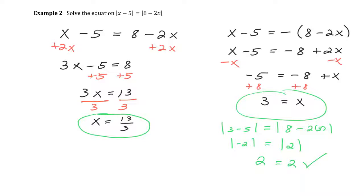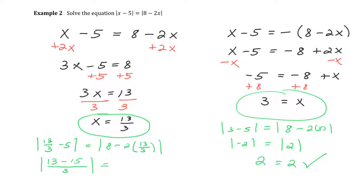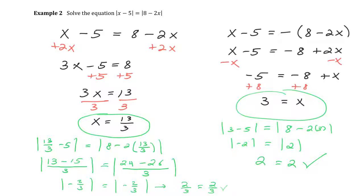Checking X equals 13 thirds: the absolute value of 13/3 minus 5 equals the absolute value of 8 minus 2 times 13/3. On the left, converting 5 to 15/3 gives 13/3 minus 15/3, which is negative 2/3. On the right, 8 is 24/3, minus 2 times 13 which is 26/3, giving negative 2/3 as well. The absolute value of negative 2/3 equals 2/3, confirming equality on both sides.